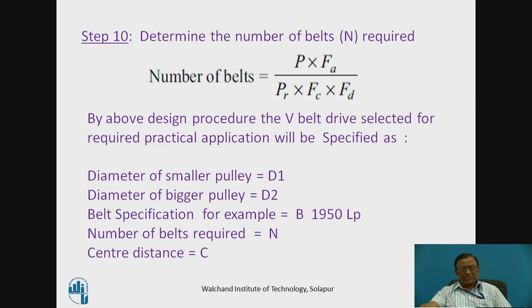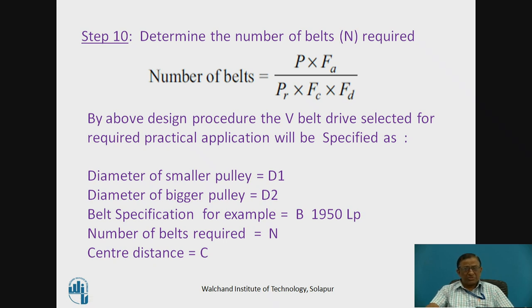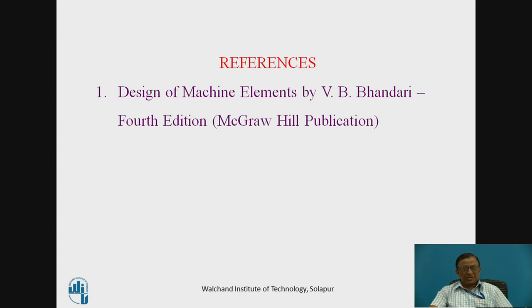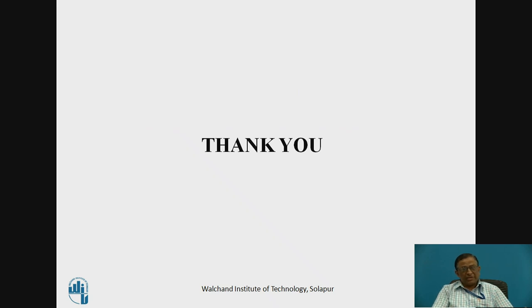This completes the total design procedure to select the V-belt drive from manufacturer's data. In conclusion, we have found: the diameter of the smaller pulley D1 as a standard value, the diameter of the larger pulley D2 as a standard value, belt specification (for example, B1950Lp), the number of belts N, and the corrected center distance C. References: Design of Machine Elements by V.B. Bhandari, 4th edition. Thank you.